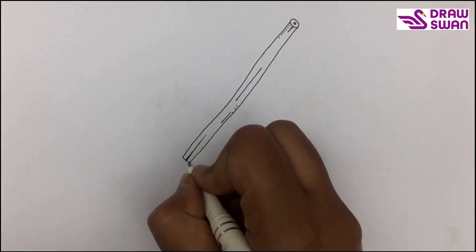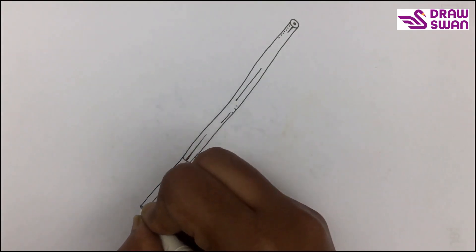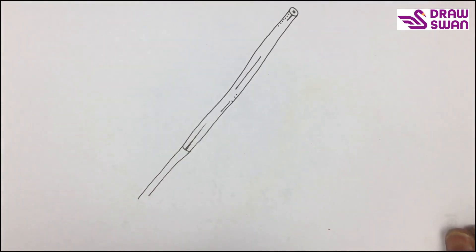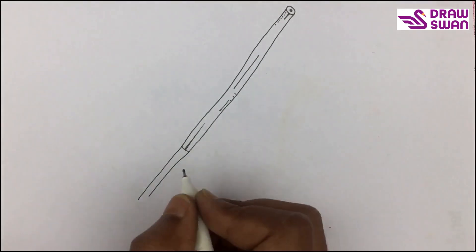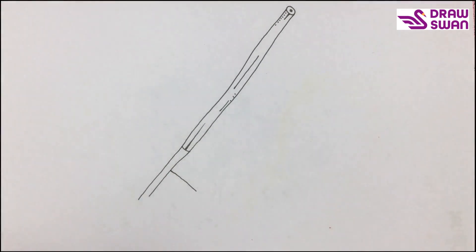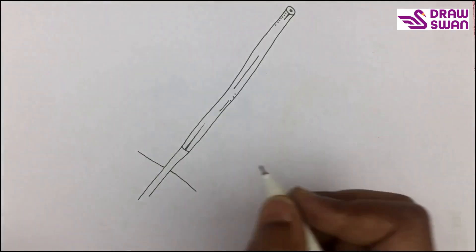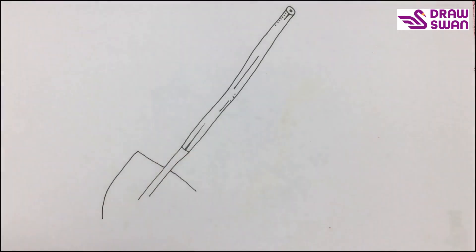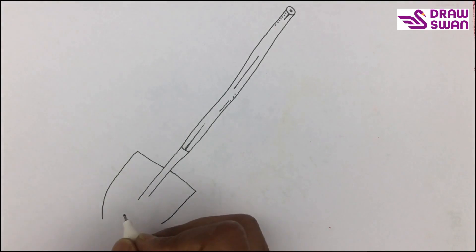And now two clean lines. It's time to draw this spade. It's really easy. Let's draw some soil.